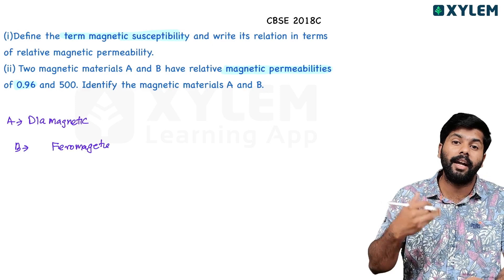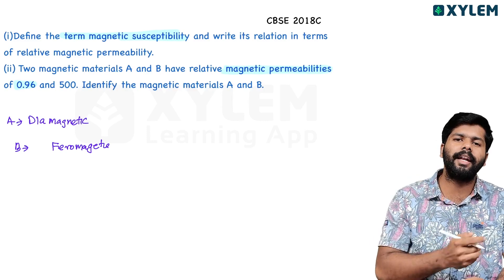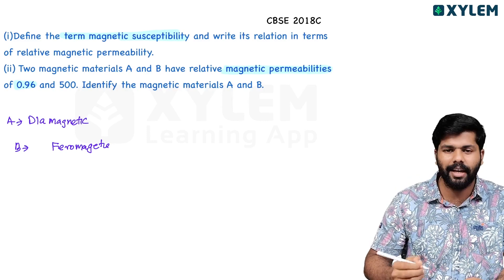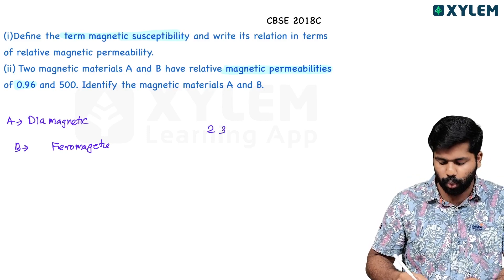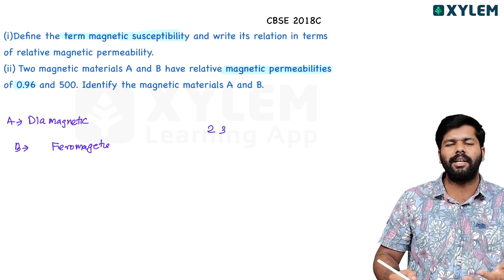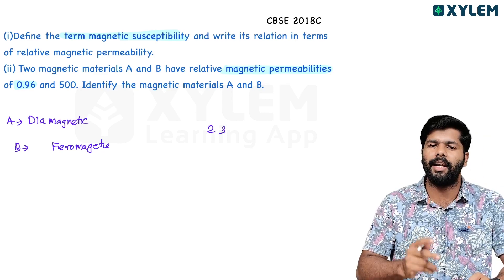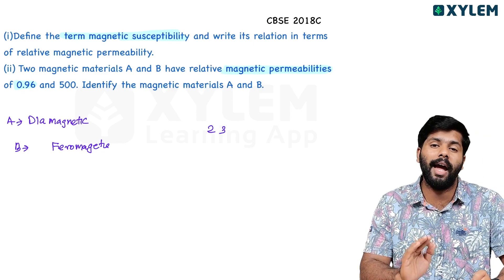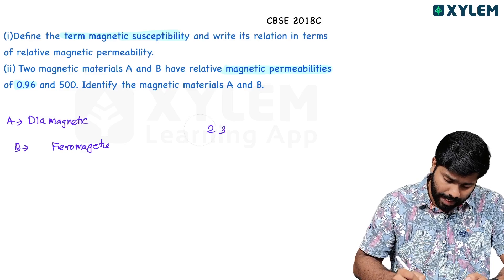A material with relative permeability slightly greater than 1 (for example, between 1 and 2) would be paramagnetic.